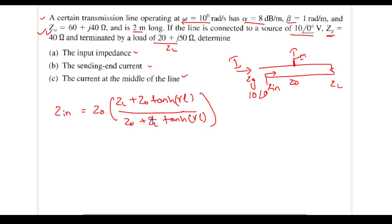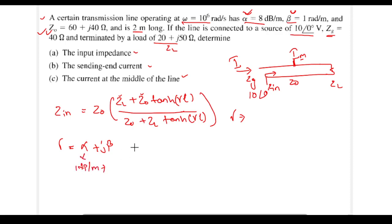In this equation, ZL is given, Z0 is given, and the length is given. The only unknown is gamma, which we need to find. Gamma equals alpha plus j·beta. The alpha is given in the question, but it's given in dB, whereas gamma requires alpha in Nepers per meter.